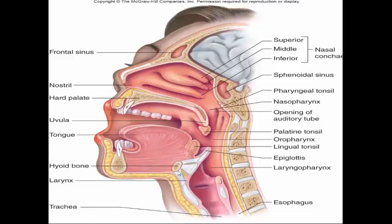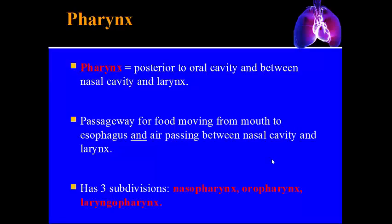Here's a more detailed image of the upper respiratory tract showing the mouth, tongue, nose, and the various sinuses including the frontal sinus. The pharynx is posterior to the oral cavity and is basically a generic term for the throat. It serves as a passageway for food moving from the mouth to the esophagus, and for air moving from the nasal cavity down to the lungs.